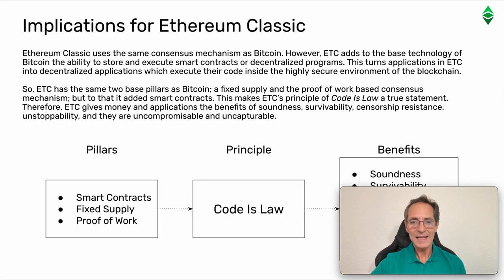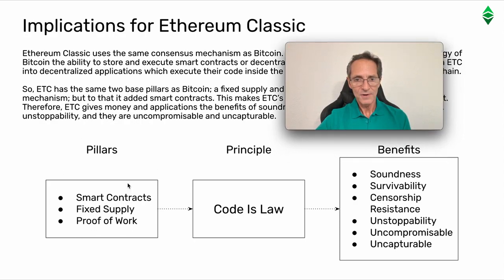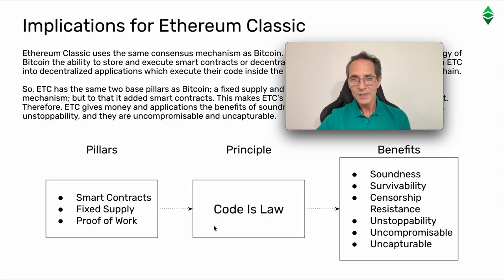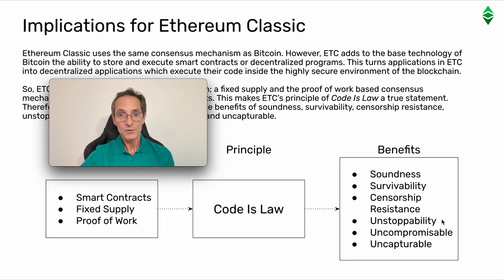Therefore, ETC gives money and applications the benefits of soundness, survivability, censorship resistance, and unstoppability. And they are uncompromisable and uncapturable. The three pillars of Ethereum Classic are smart contracts, which Bitcoin doesn't have, plus fixed supply and proof-of-work, which are the ones it brings from Bitcoin. These truly guarantee the tangibility and truth of 'code is law' as a principle. This principle assures immutability and benefits such as soundness of the money, survivability, censorship resistance, unstoppability of applications, transfers, accounts, and balances — and the whole system is uncompromisable and uncapturable.